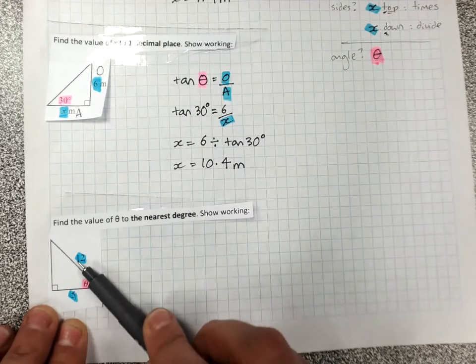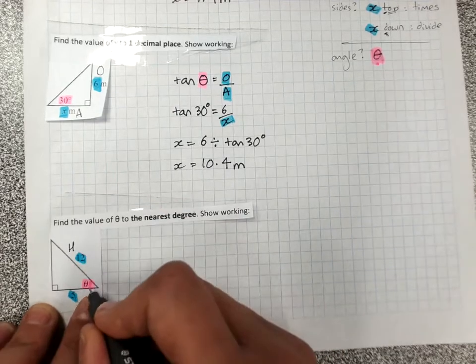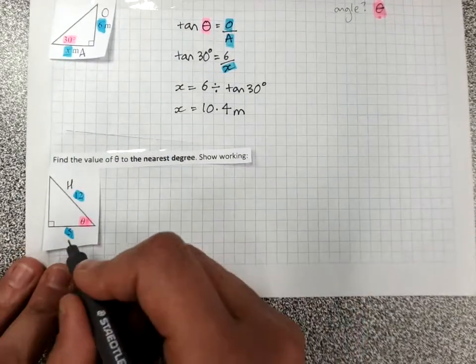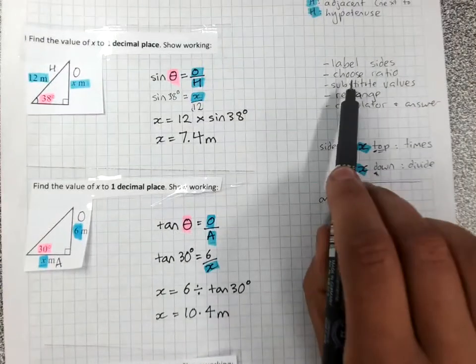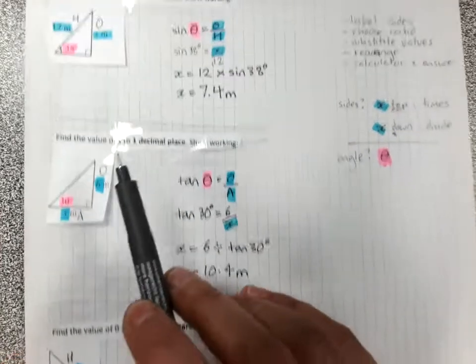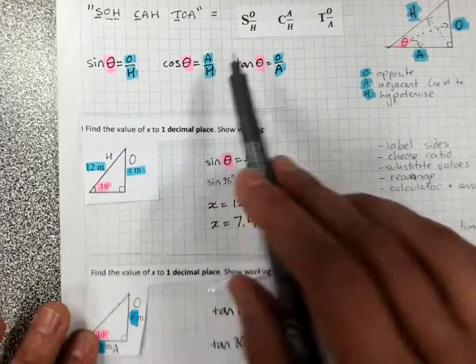Go to the right angle. Is there anything on the hypotenuse? Yes, there is. Go to the angle. Nothing on the opposite. Don't label it. On the adjacent, we've got five. Choose your ratio. I've got adjacent and hypotenuse. Which one uses adjacent and hypotenuse? It's cos. We're going to write.